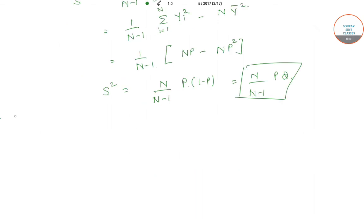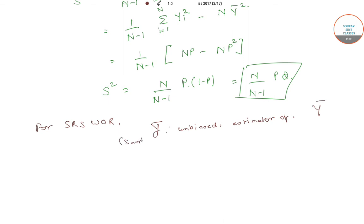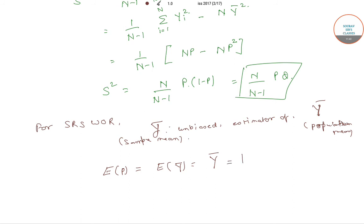For simple random sampling without replacement, we have the sample mean y bar as the unbiased estimator of the population mean capital Y bar. Therefore, the expectation of p, which equals the expectation of y bar, equals capital Y bar, which equals capital P.